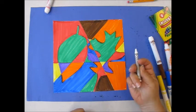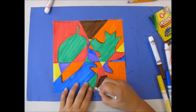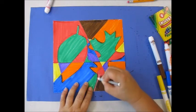What I like to do is take a white crayon and go over the leaf. It just makes the leaf pop out a little bit.